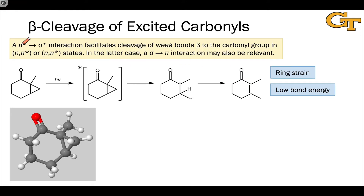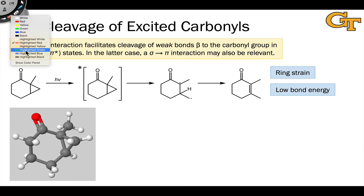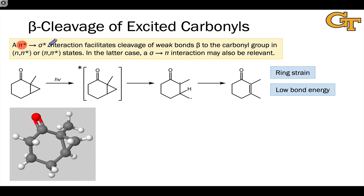One of the key things we just noted is that the pi-star electron in the n-pi-star or pi-pi-star state can facilitate beta cleavage because it's relatively high in energy and relatively nucleophilic. In a beta cleavage process, that nucleophilic orbital overlaps with an electrophilic sigma-star orbital associated with a weak bond. This is very important to make the thermodynamics work out — the bond must be weak or associated with a group that can support radical character, and that weak bond is beta to the carbonyl group.